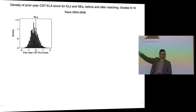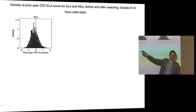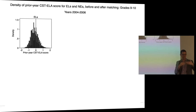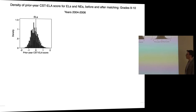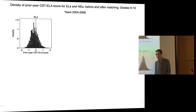After re-weighting, the never-English-learner comparison group looks identical in distribution to the English learners. We then run RDs on the re-weighted never-English-learners to see if they have any effect estimate at the reclassification threshold, and subtract that off from what we estimate for the kids who are actually English learners — done in both the pre-2007 and post-2007 periods.